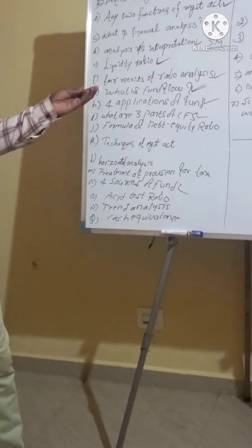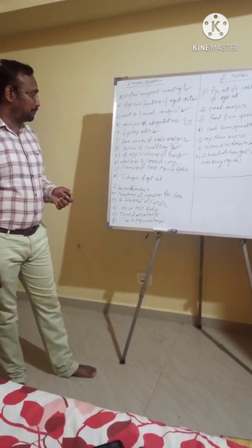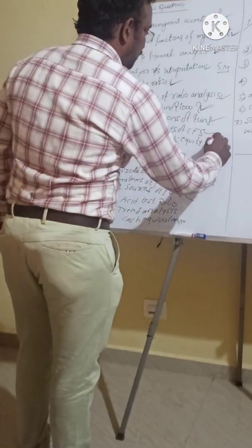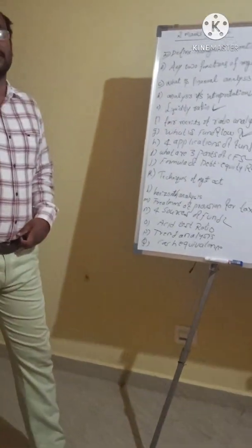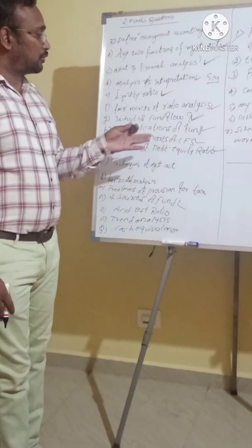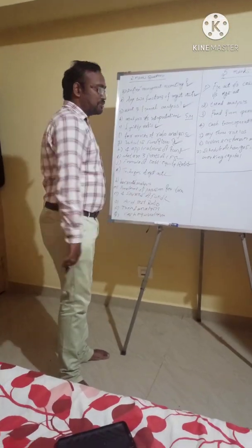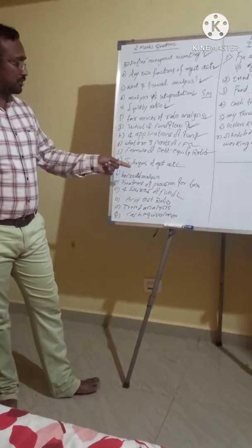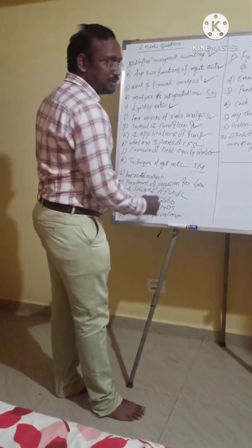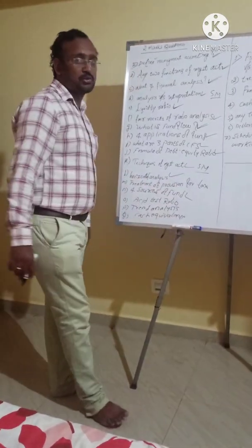What are the three parts of a cash flow statement? Cash flow statement has operating activity, financing activity, and investing activity. Write the formula of debt equity ratio — debt equity ratio formula is important in the context of management accounting. This is a five-mark question, sometimes two marks. What is horizontal analysis?